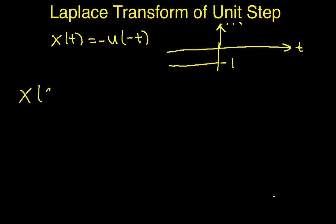What we're going to do is take the Laplace transform of x of t equals minus u of minus t. This is a signal that looks like this. It has a value of minus one for values of t less than zero, and a value of zero for values of t greater than zero. So let's just actually compute the Laplace transform here and see what we get.